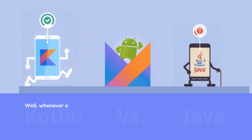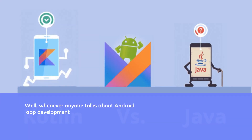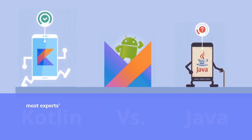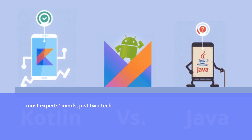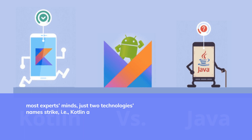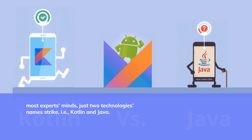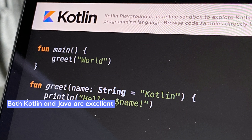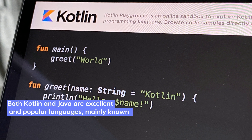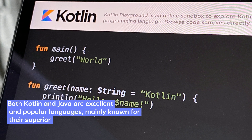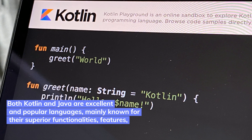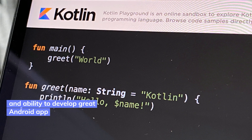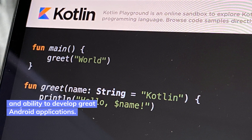Whenever anyone talks about Android app development, then in most experts' minds, just two technology names strike: Kotlin and Java. Both Kotlin and Java are excellent and popular languages, mainly known for their superior functionalities, features, and ability to develop great Android applications.